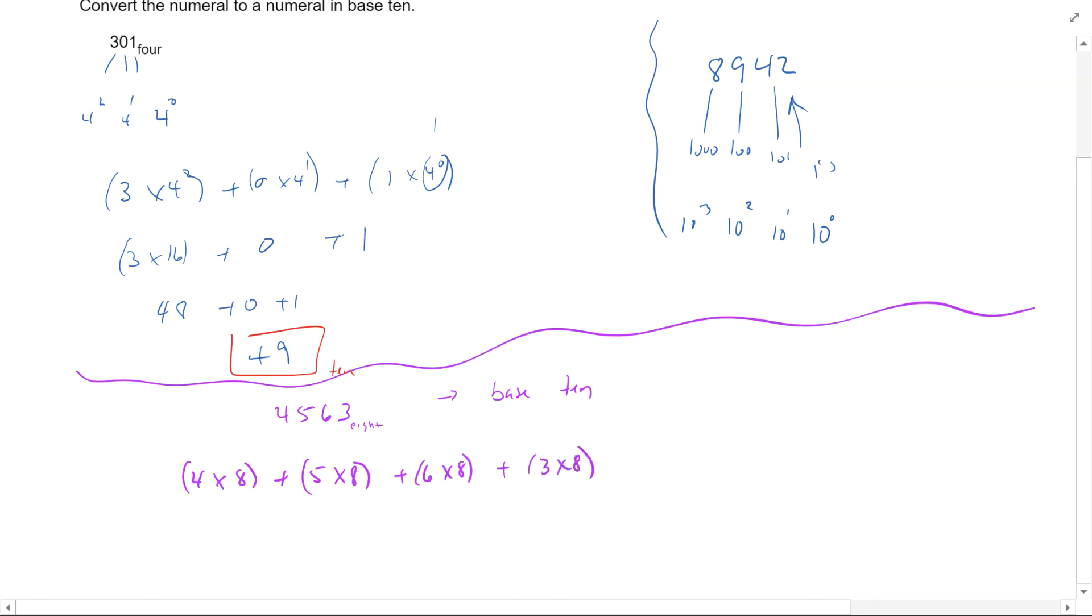We know we're going to go from 0, starting on the right, and count up. So this is going to be 8 to the 0, 8 to the 1st, 8 to the 2nd, 8 to the 3rd. Now I'm going to multiply, add, multiply, add. When I add all these together, I'll have my number in base 10.